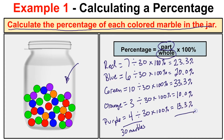Keep in mind that percentages are always going to be out of 100 percent. If we add these up we get 99.9 percent — we are one tenth off 100 percent because of rounding to the tenths place. You're usually allowed an error of about 0.1, so if you end up with 100.1 or 99.9 that is good enough. To get the percentage, take the part divided by the whole times 100 percent.